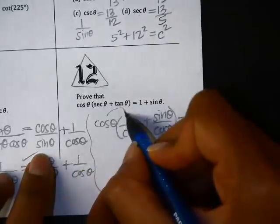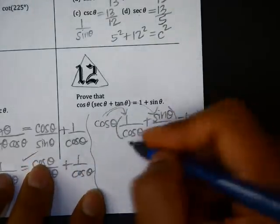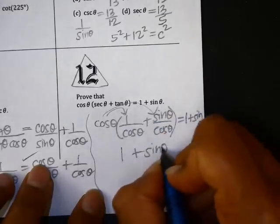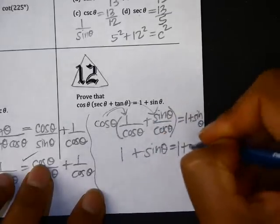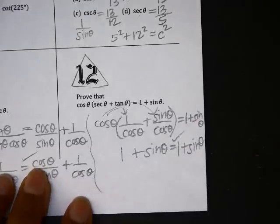Then here we need to distribute the cosine theta to both of these. Cosine times 1 over cosine is 1. Cosine times sine over cosine is sine. 1 plus sine theta equals 1 plus sine theta. We've proved that both sides are true.